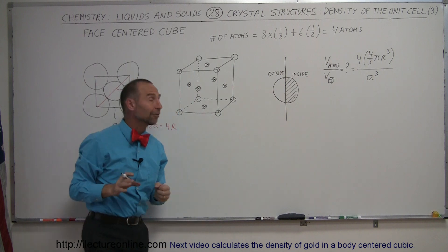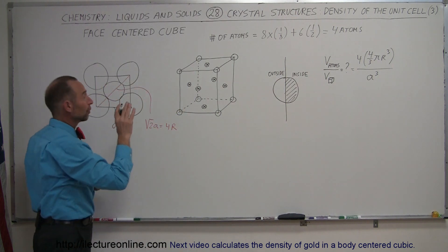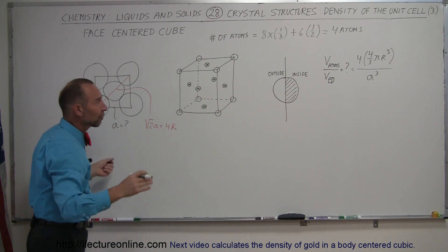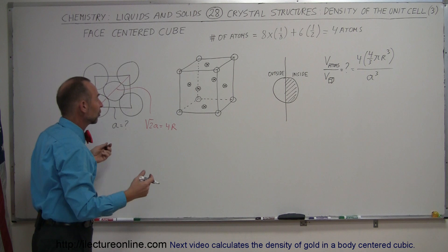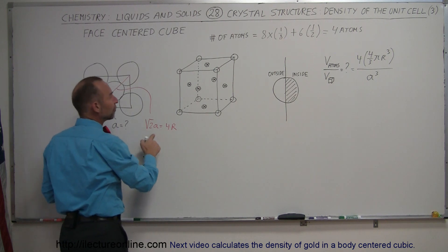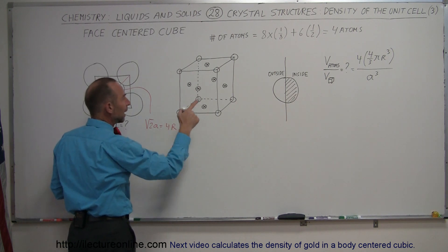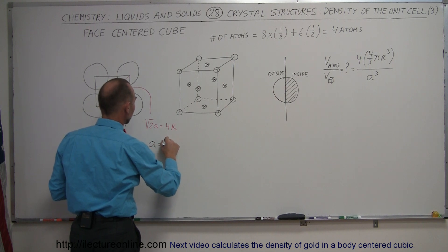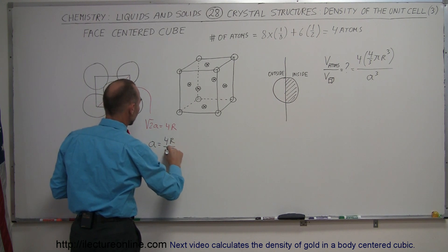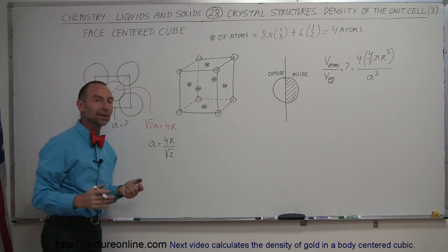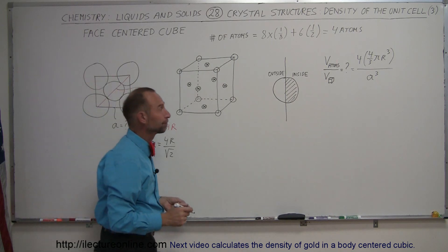We need to convert a³ in terms of r. Let's solve for a: from √2 · A = 4r, we get a = 4r / √2. We then substitute this expression for a into the denominator.